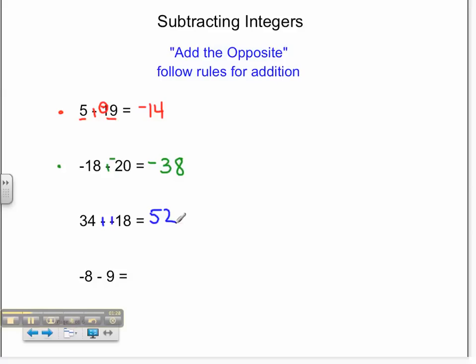And my final problem, negative 8 minus 9. Again, I'm going to make an addition problem. The opposite of positive 9 is negative 9. Negative 8 plus negative 9. The addition rules say that since my signs are the same, I'm going to add 8 plus 9 to get 17. Since they're both negative, my solution is negative 17.